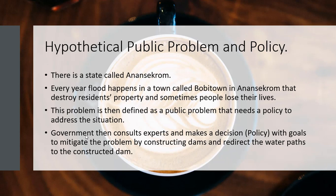This also reveals something we will discuss in later lessons when we talk about the policy community: before government makes decisions, it consults experts. Not only experts, but civil society and interest groups also try to influence the decisions of government. So on the surface it appears that government is making decisions, but what actually happens is that many people outside the government are involved in the decision-making process to solve public problems.